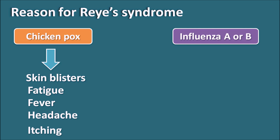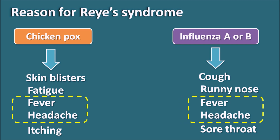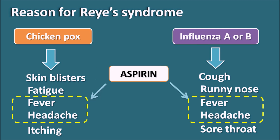Influenza is another viral infection which mainly causes cough, runny nose, fever, headache, and sore throat. Both viral infections share common symptoms of fever and headache. To control this fever and headache, if aspirin is given during chickenpox or influenza, it can induce Reye's Syndrome. Therefore, aspirin should not be given to control fever and headache during these two viral infections.